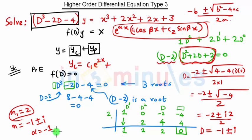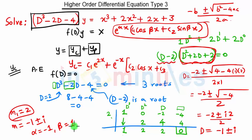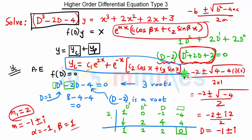In our case α = -1 and β = 1. So the complementary function yc is: yc = c1·e^(2x) + e^(-x)·(c2·cos(x) + c3·sin(x)). This is our solution for yc.